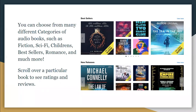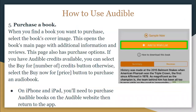Scroll over a particular book to see ratings and reviews. When you find a book you want to purchase, select the book cover image. This opens the book's main page with additional information and reviews, and also has a purchase option. If you have Audible credits available, select the Buy for credits button; otherwise, select the Buy Now for price button.